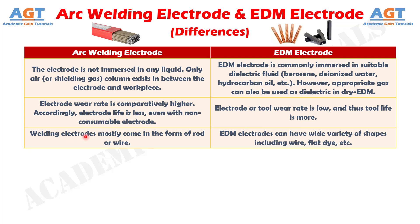Number 7: arc welding electrodes mostly come in the form of rod or wire, whereas electric discharge machining electrodes can have a wide variety of shapes including wire, flat die, etc.